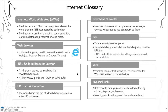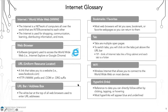A URL, or uniform resource locator, is a link that takes you to a website — such as www.facebook.com. It will always have an HTTPS and www prefix, and a suffix like .com, .org, or .edu. The suffix gives you an idea of what kind of website it is: .com is usually a for-profit company, .org is a non-profit organization, and .edu is an educational institution. The URL bar or address box is the white bar at the top of all web browsers where you type in your URL addresses.